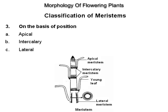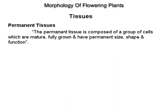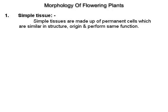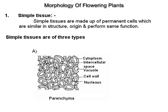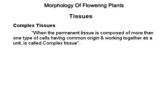Classification of meristems on the basis of position: apical, intercalary and lateral. Permanent tissues: the permanent tissue is composed of a group of cells which are mature, fully grown and have a permanent size, shape and function. They are classified as simple tissues and complex tissues. Simple tissues are made up of permanent cells which are similar in structure, origin and perform the same function. Simple tissues are of three types: parenchyma, colenchyma and sclerenchyma. Complex tissue: composed of more than one type of cells having common origin and working together as a unit. The complex tissues are xylem and phloem.